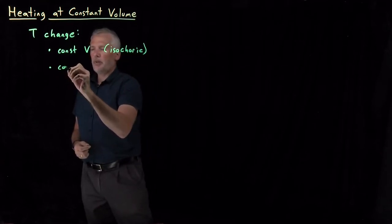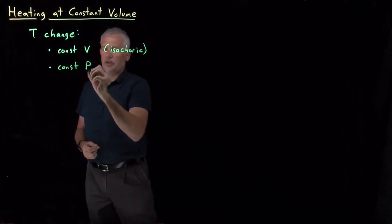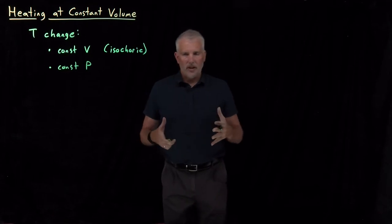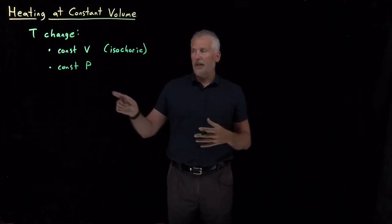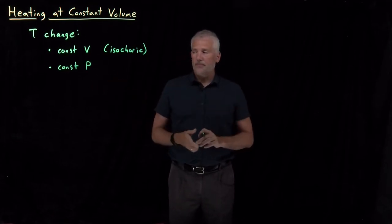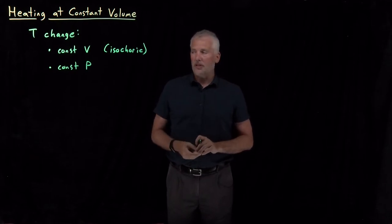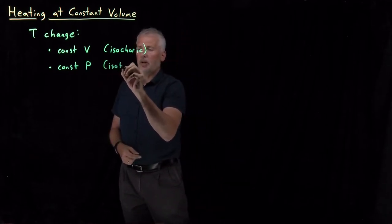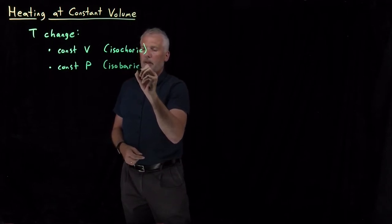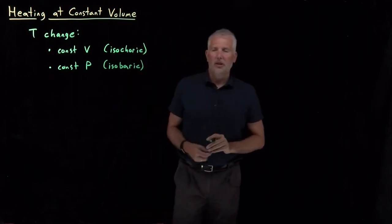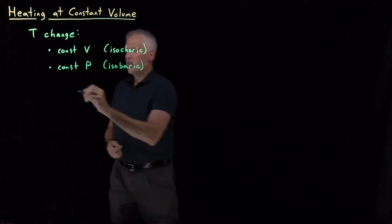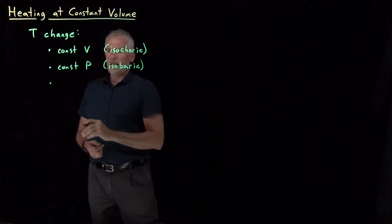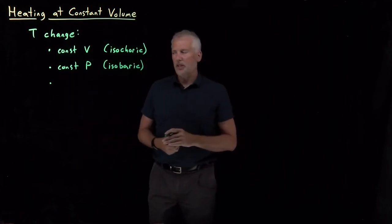Or I could do that process under constant pressure. So I have a container, I heat it up, it will normally expand. If I allow it to expand by keeping the external pressure constant, then the volume goes up. So that process is called an isobaric process. The thing that I'm not changing is the pressure. Or, of course, there's an infinite number of ways that I can allow both the pressure and the volume to change in different ratios.